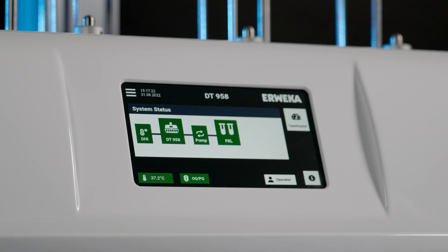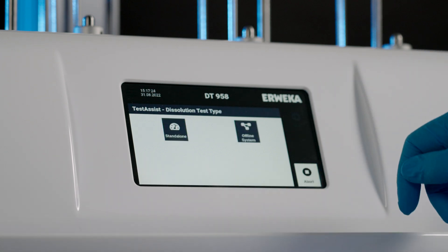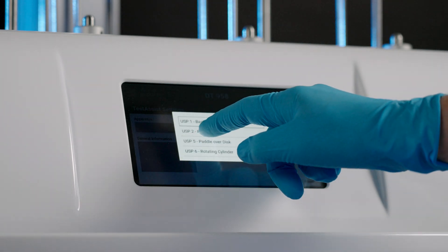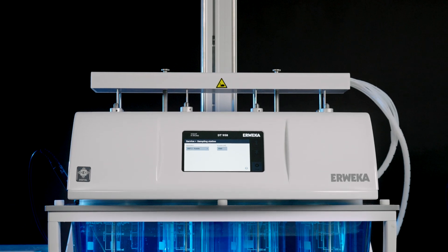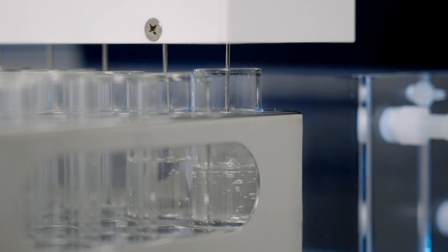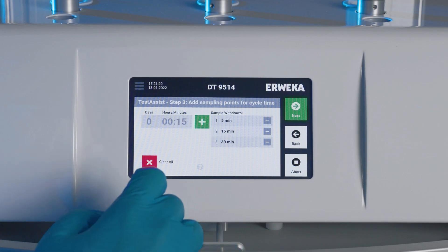TestAssist now offers two testing modes: the stand-alone testing mode and the new offline testing mode, which enables TestAssist to control the connected automatic sampling station, pump and sample collector for fully automated, highly precise sample taking and sample storing at user-defined time points.